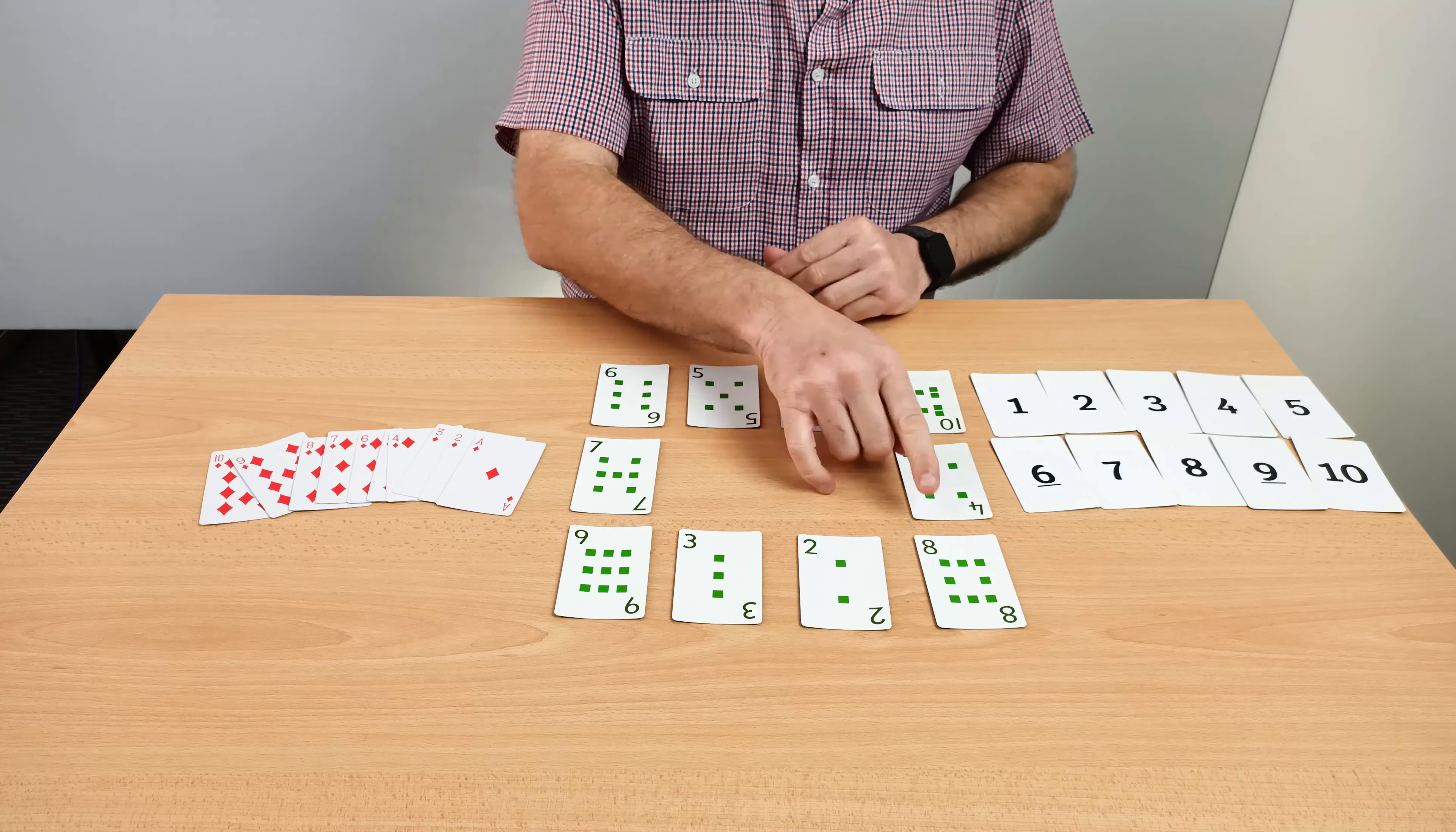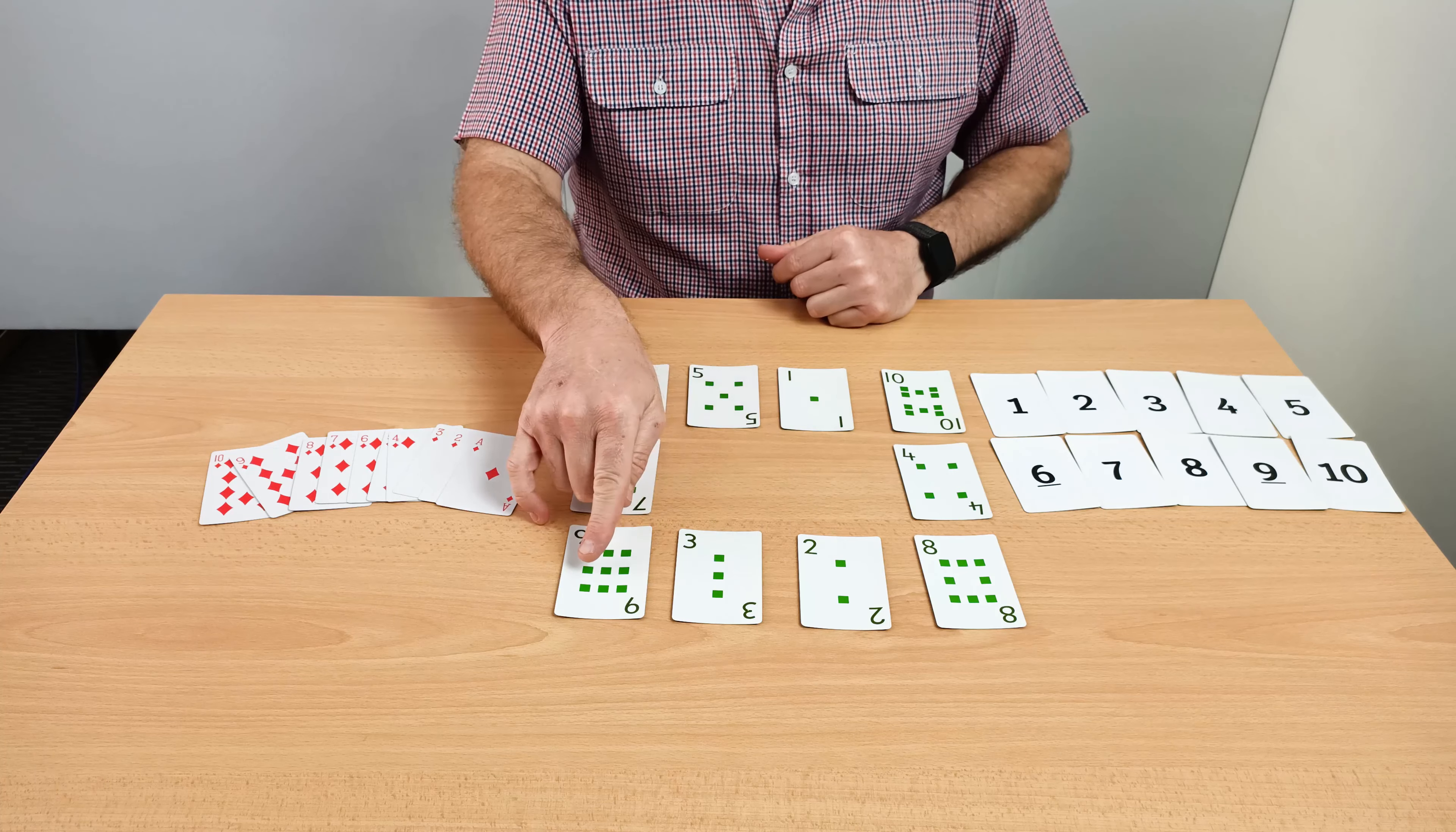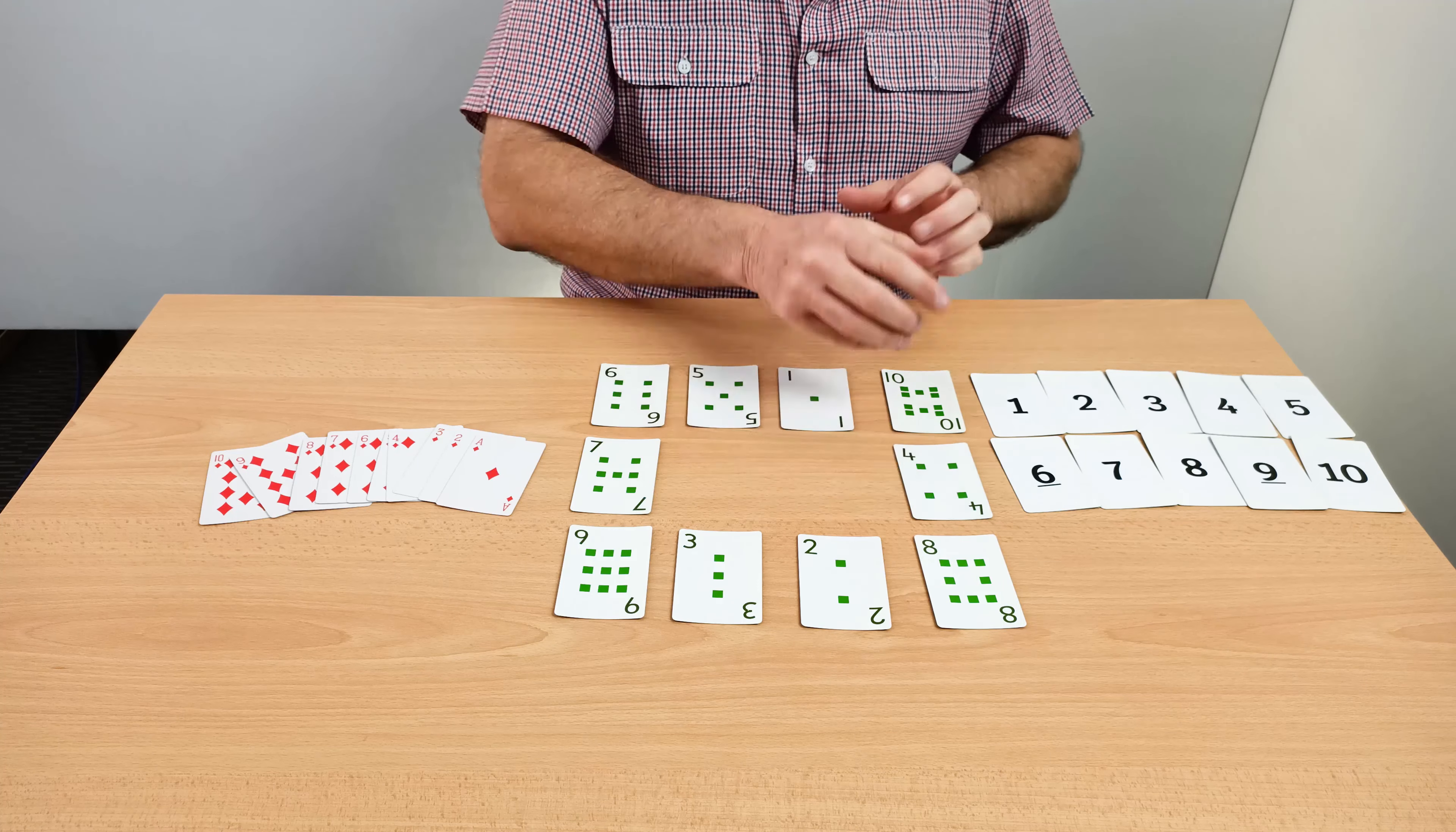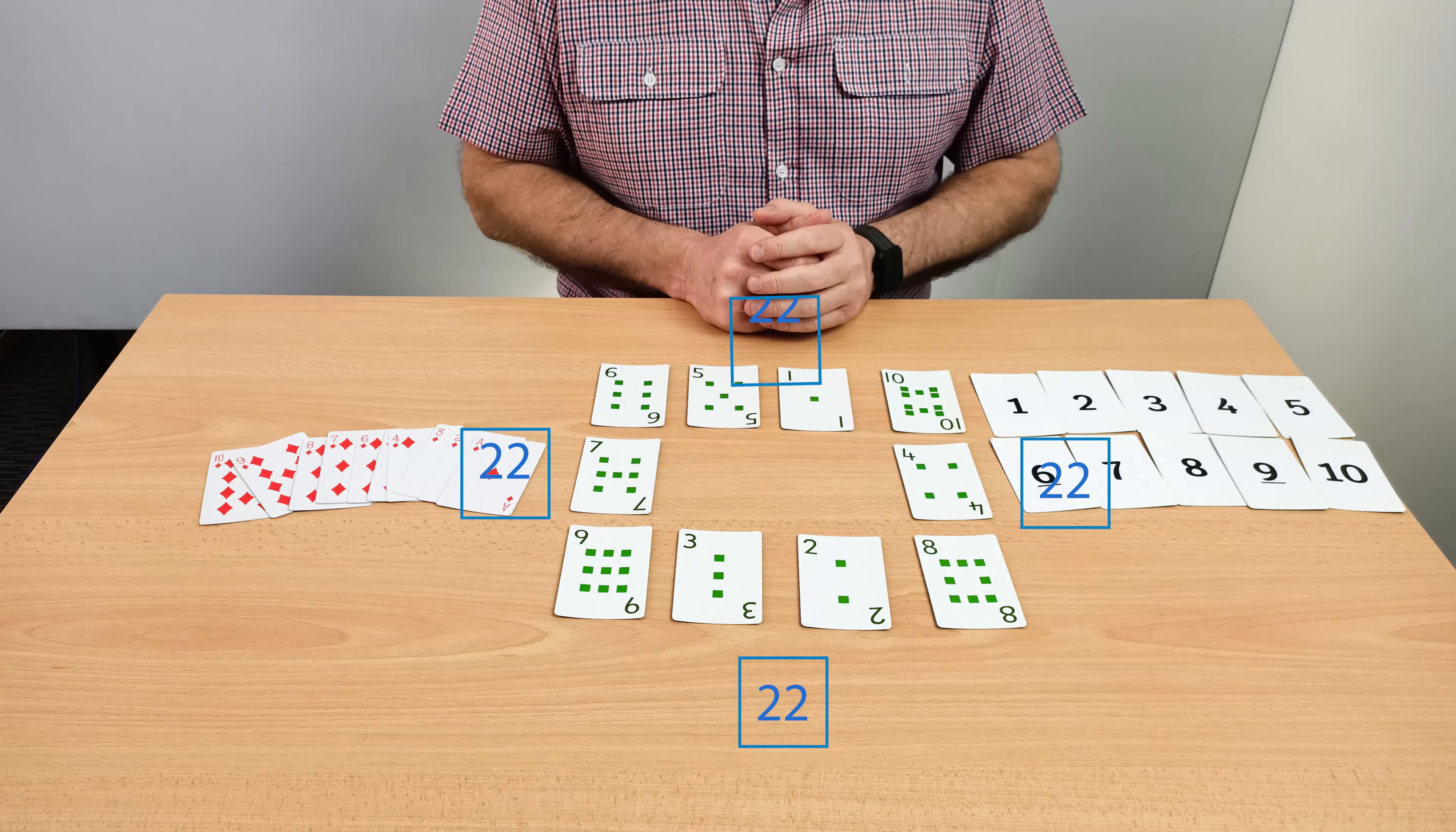For example, if I look at the bottom here, I've got eight and two's ten, thirteen, and another nine's twenty-two. If I look at this side here, eight and four is twelve, another ten's twenty-two. All of the sides total the same amount, twenty-two.